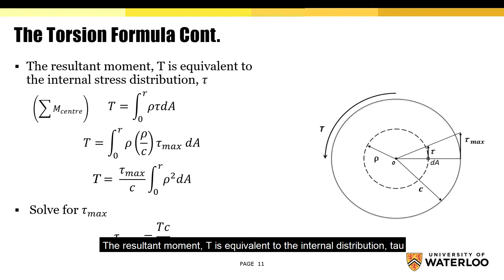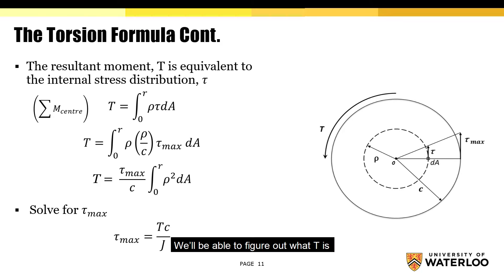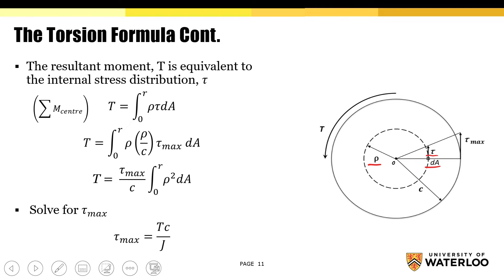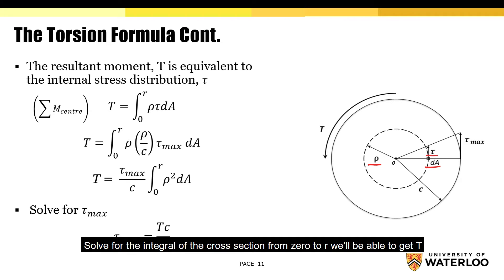The resultant moment T is equivalent to the internal distribution tau. In other words, if we can figure out the shear stress distribution acting on the cross section, we'll be able to figure out what T is. We'll accomplish this by using rho, tau, and dA. Note shear stress times dA represents the force, while rho represents the lever arm. Now if we use these variables and solve for the integral of the cross section from 0 to r, we'll be able to get T.